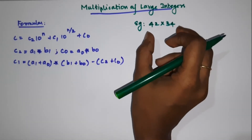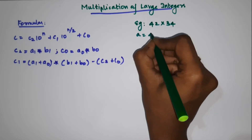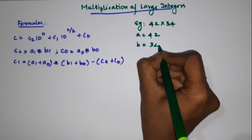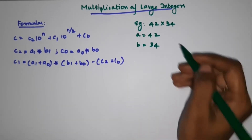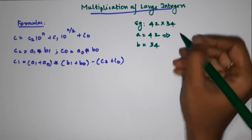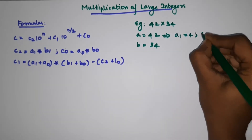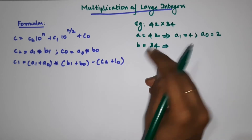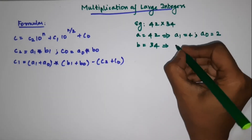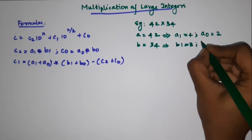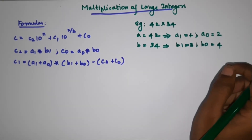We will apply the formula to this example. We say a is equal to 42, b is equal to 34. We split the digits: A1 is equal to 4, A0 is equal to 2, B1 is equal to 3, B0 is equal to 4. We have now split A1, A0, B1, B0.